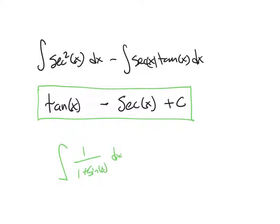The trick was to multiply by the conjugate, 1 minus sine of x, in a form of 1, and transform this into two pieces that we could evaluate. We end up with this result. Hopefully that helped. You're going to use this trick on the other problems, 58 through 60, that we're working on tonight. Good luck.